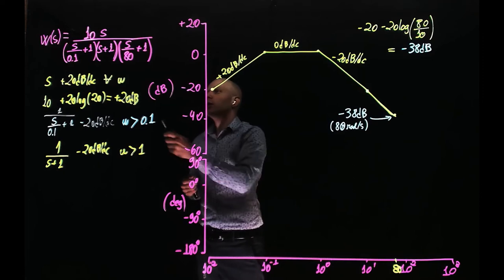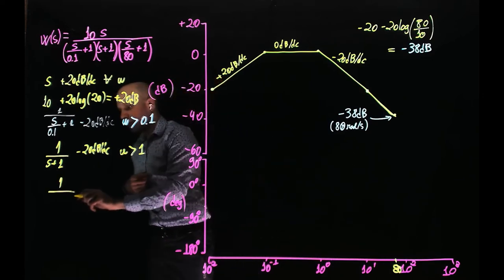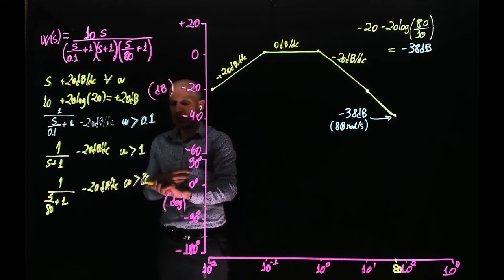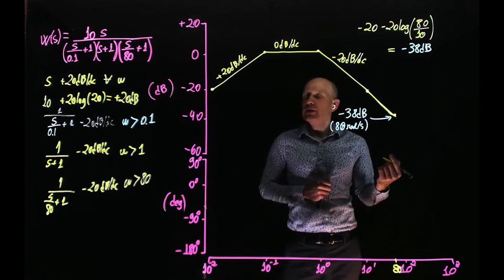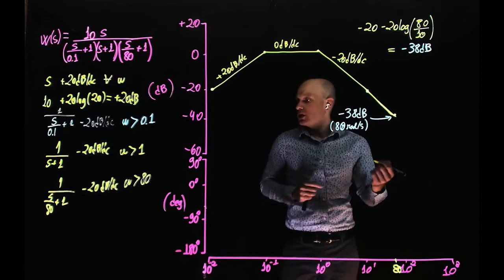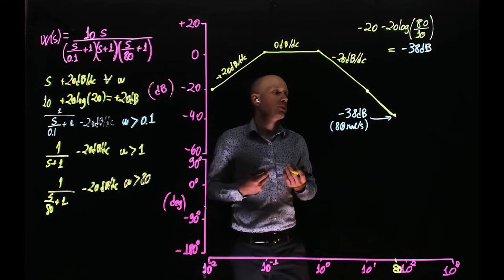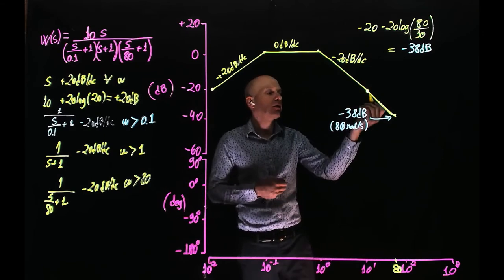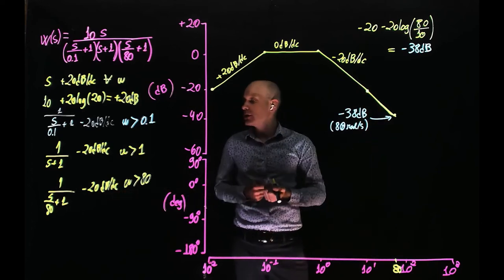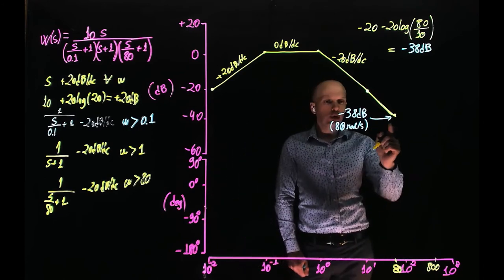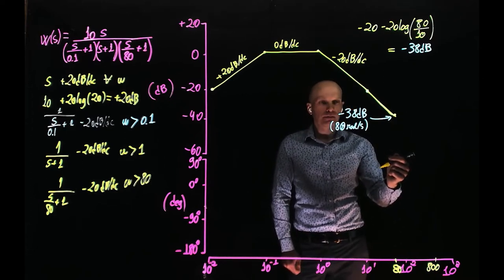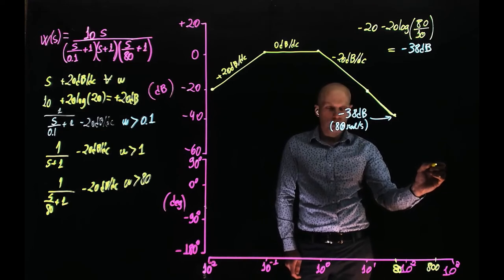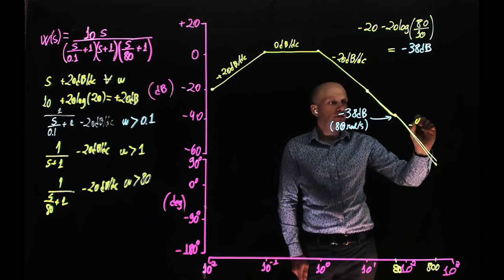Now past 80, we encounter another pole. The real pole at 80 adds negative 20 dB per decade for frequencies higher than 80 radians per second. So the slope now becomes negative 40 dB per decade. When you cross a pole, the slope doesn't simply become negative 20 dB per decade — we add negative 20 dB per decade to the existing slope. The existing slope was negative 20, and negative 20 minus 20 because of this other cutoff frequency is now negative 40 dB per decade.